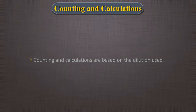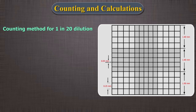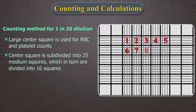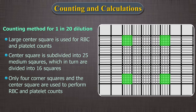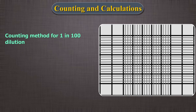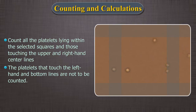Counting and calculations are based on the dilution used. A. Counting method for 1:20 dilution: when the dilution is 1:20, the larger center square is used for RBC and platelet counts. This area is subdivided into 25 medium squares, which in turn are each divided into 16 squares. Of these, usually 5 squares — the 4 corner squares and the center square — are used to perform RBC and platelet counts. B. If using 1:100 dilution, use the entire large center square to count the platelets — platelets in all 25 squares within the large center square are counted. C. Count all the platelets lying within the selected squares and those touching the upper and right-hand center lines. The platelets that touch the left-hand and the bottom lines are not to be counted.